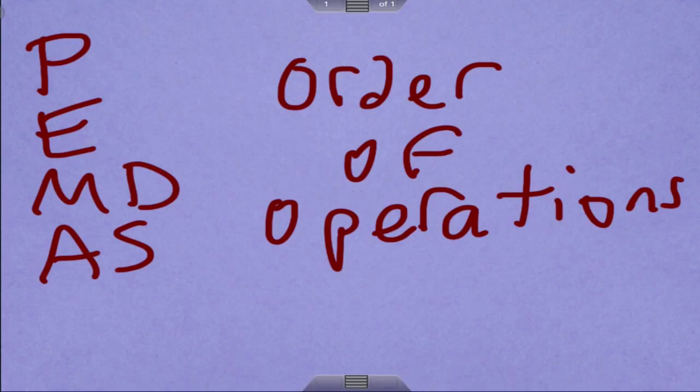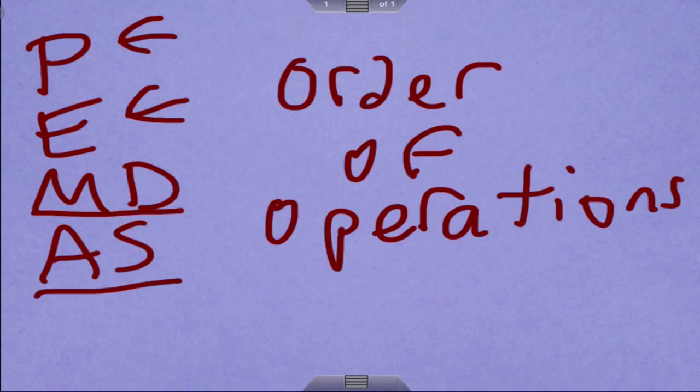So what PEMDAS stands for is P, which is parentheses, so we always do parentheses first, then exponents. Then we have multiplication, division, they come before addition and subtraction. The reason why multiplication, division, and addition and subtraction are written on the same line is because we go left to right.